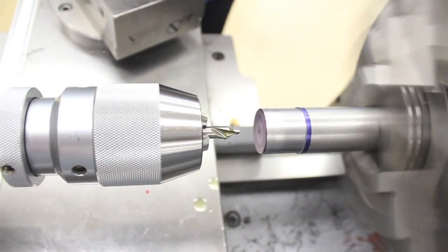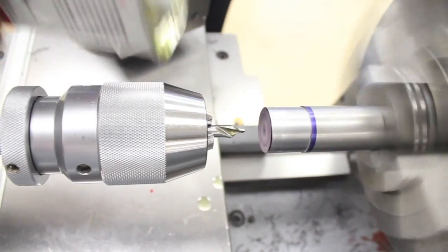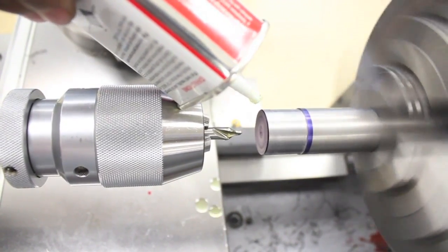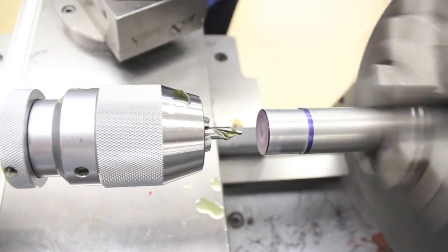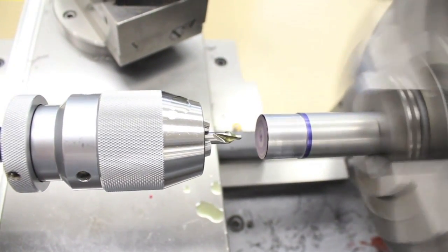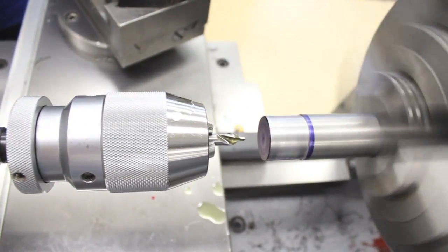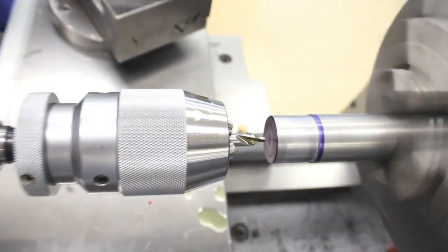This method is called peck drilling. Peck drilling is a drilling method that allows chips to be cut and broken by backing the drill away from the surface. Cutting oil should be used during this operation for maximum effectiveness.